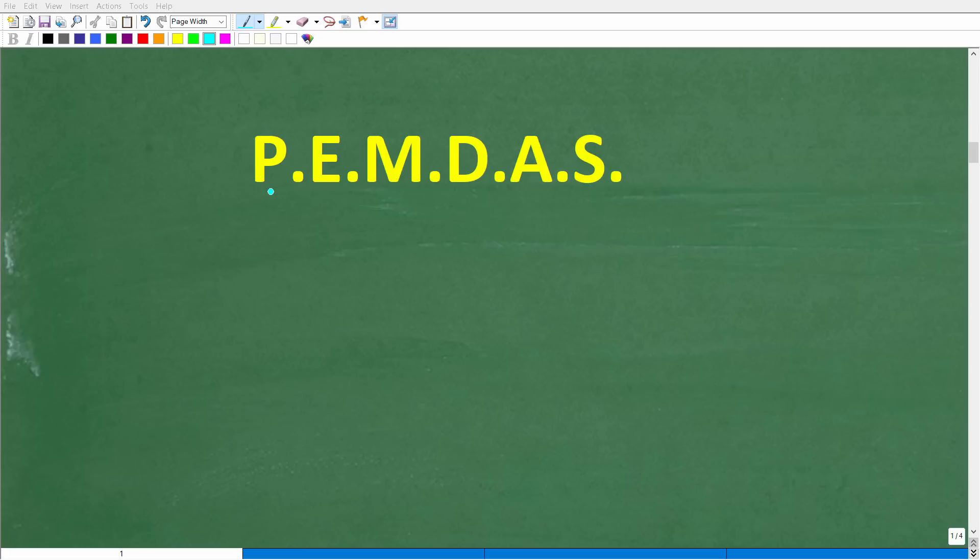So when you have more than one operation in a problem, well, you have to follow the proper order of operations. Okay, now, PEMDAS is an acronym, but basically it's a checklist that we go from left to right to figure out the proper order of operations in a problem. Okay, so what do these letters stand for? Well, P stands for parentheses, E stands for exponents, M stands for multiplication, D stands for division, A stands for addition, and S stands for subtraction.